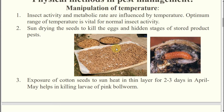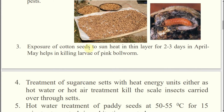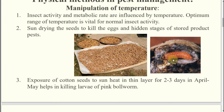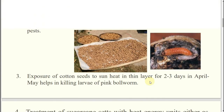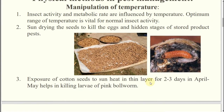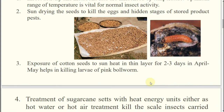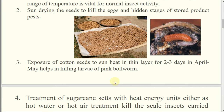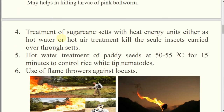Exposure of cotton seeds to sun heat in a thin layer for two to three days in April to May — the high summer season — will kill the larva of pink bollworm. The scientific name of pink bollworm is Pectinophora gossypiella. Then treatment of sugarcane sets — the planting material of sugarcane — with heat energy either as hot water or hot air treatment will kill scale insects present on them.